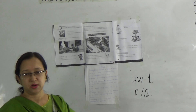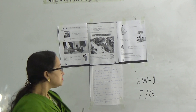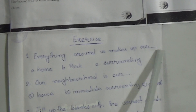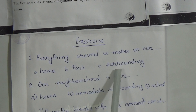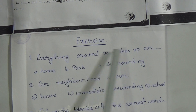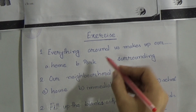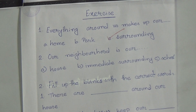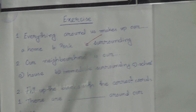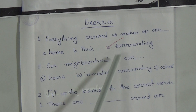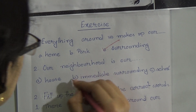Exercise number one: pick the correct answer. Number one — 'Everything around us makes up our dash.' The options are: home, park, surrounding. The answer is 'surrounding,' so put the tick mark on surrounding. Number two — 'Our neighborhood is our dash.' Options: a) house, b) immediate surrounding, c) school. The answer is 'immediate surrounding,' so put the tick mark on immediate surrounding.